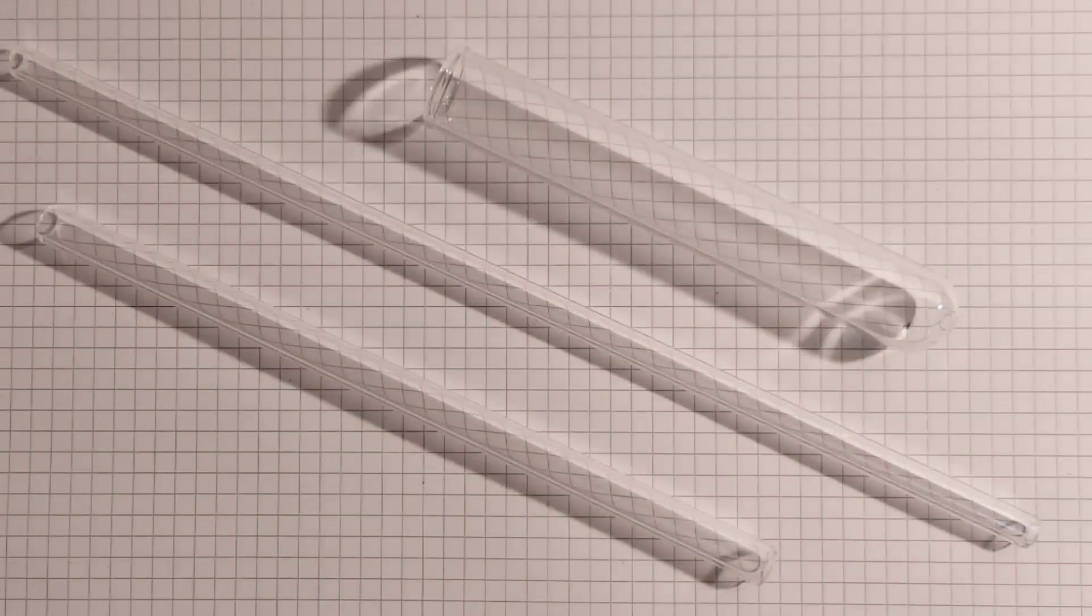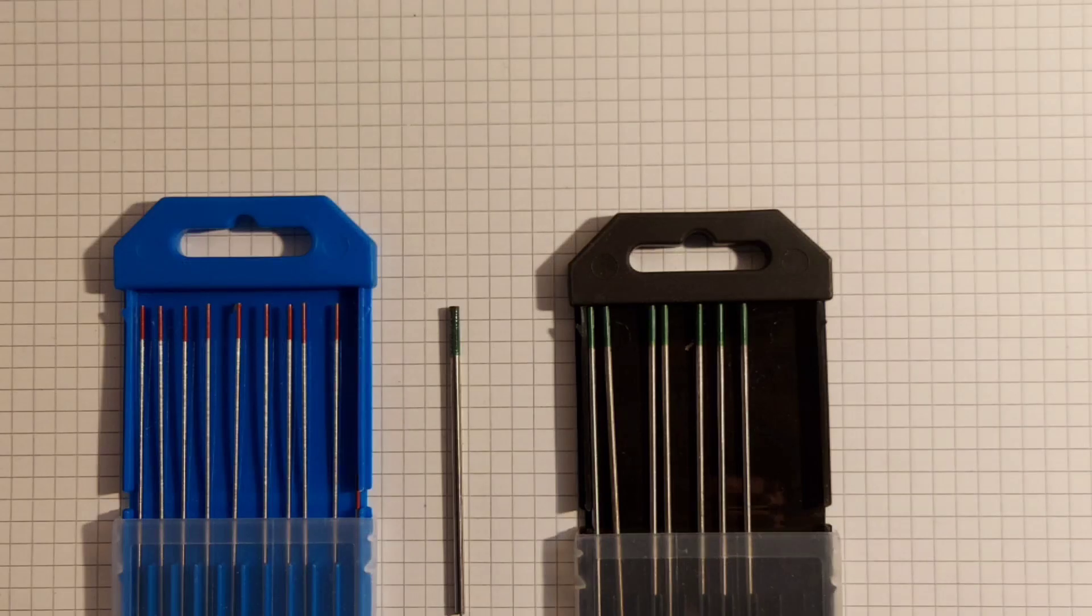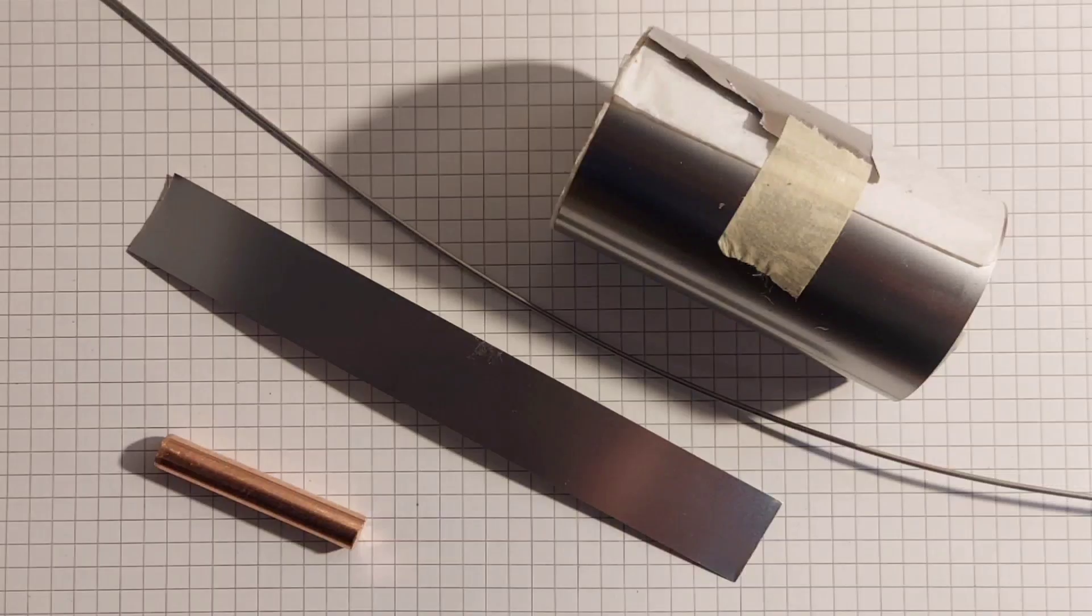I used borosilicate glass like test tubes and glass tubes, tungsten welding electrodes for the glass to metal seals, and some metal parts I had laying around like this copper cylinder here.